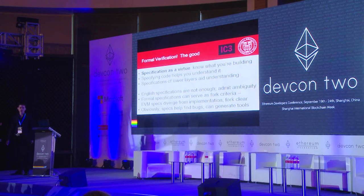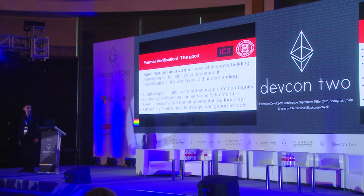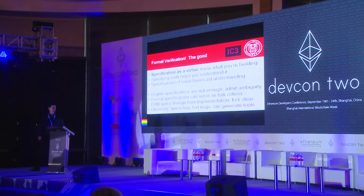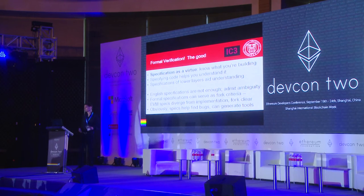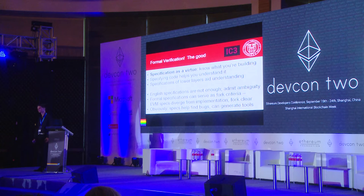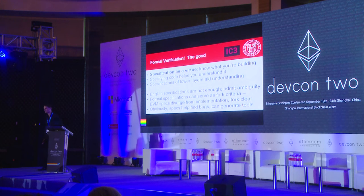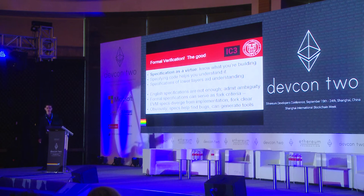English specifications are pretty common in the field but are definitely not enough — they admit ambiguity. For an example, check out the ISO C11 standard, which has a whole committee whose job it is to argue about whether certain programs do or do not conform to the standard. Formal specifications can also serve as criteria for forks: the question of when to fork these systems could be answered by when the implementation differs from its specification, giving you a very clear bug.